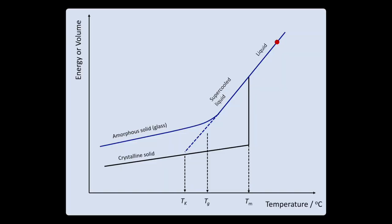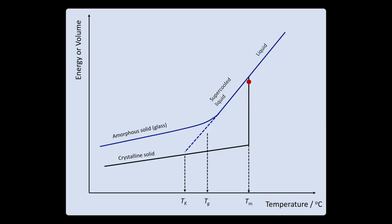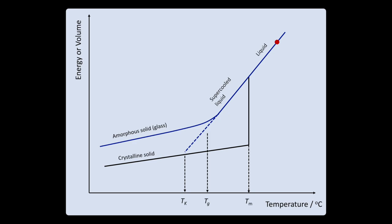Glasses are really high viscosity liquids, formed when a material is cooled rapidly from the liquid state. I've explained the formation of glasses in some detail in another video — link below — but in brief: as we cool a material from the melt, if we don't give the molecules time to reorient themselves and condense into perfect alignment in a crystalline structure, then we will form a supercooled liquid. That is, a liquid that exists below the melting temperature of a crystal form.